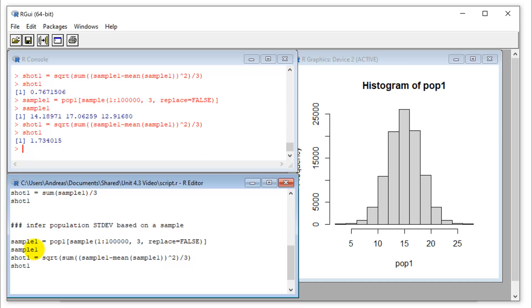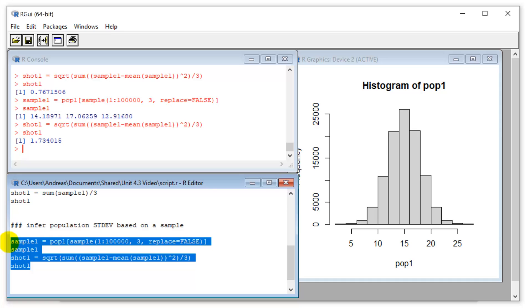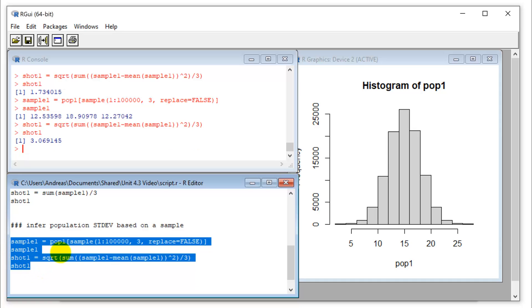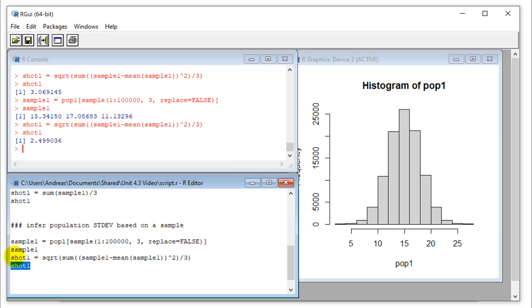Now, if we do the same thing for standard deviations, so I do this again, I take my sample, I look at my sample. Now I'm taking the sum of squares, and I am going to divide them by three. So I'm going to use the population formula here, divide by n. Let's see what happens. So if I do this, that's my shot at estimating the population standard deviation. And what is it? That's substantially too low. Let's try this again.